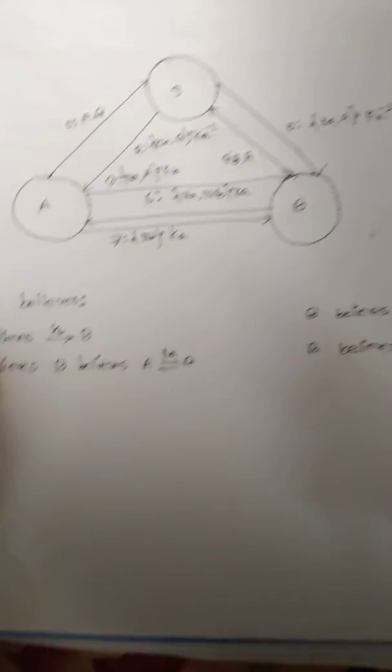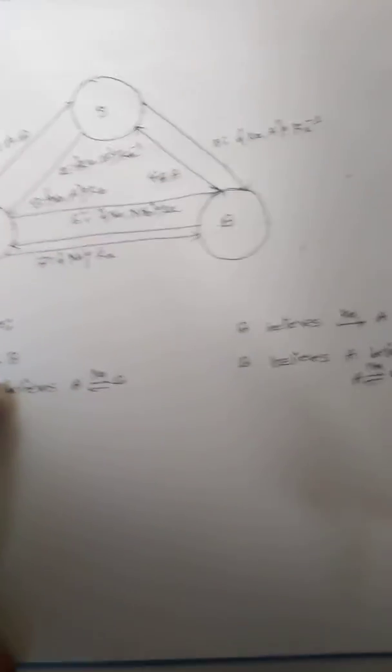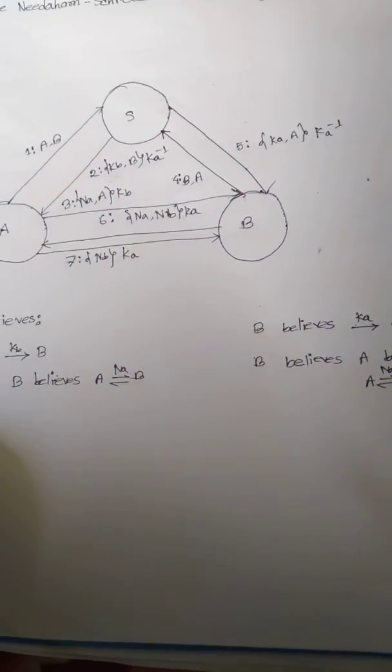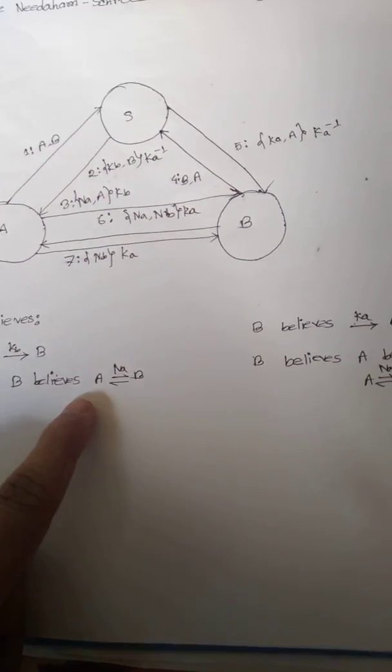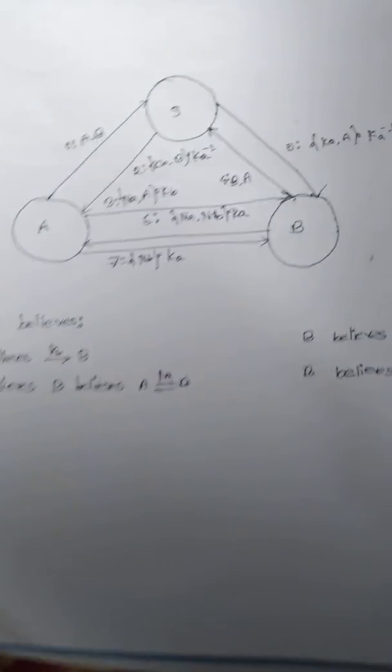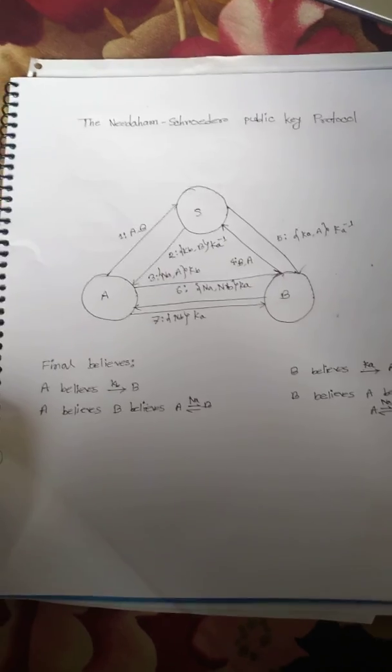In the final steps, we see A believes B and B believes A. With the nonce exchange, they achieve mutual authentication. Thank you.